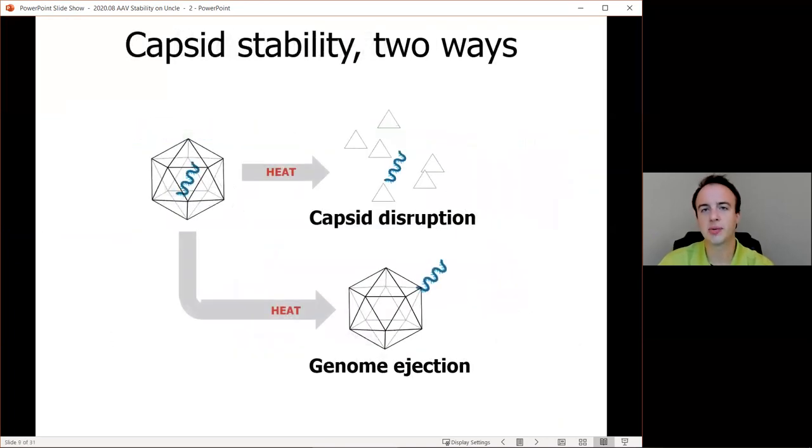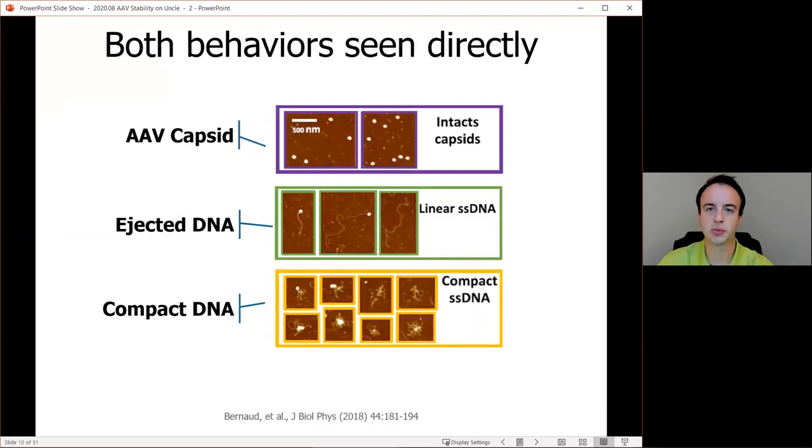So the first question to address is, how do we know that AAV capsids have two different options for stability issues? Well, we can take a look at this paper by Vernau. Here we have AFM measurements on AAVs 8 and 9 while heating. You can see linear DNA molecules that are ejecting from intact capsids, which is a result of that genome injection pathway shown earlier. At the top of the slide, we actually see intact AAV capsids shown as bright white discs. In the middle, we'll see those linearly ejected DNA as the sample gets heated up and DNA is escaping from intact capsids. And at the bottom, we see relatively intact piles of DNA that are left behind after capsid disruption occurs. I like to sometimes call this the Death Star exploding and leaving behind a pile of DNA.